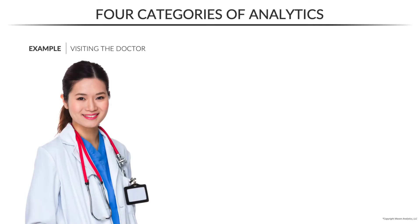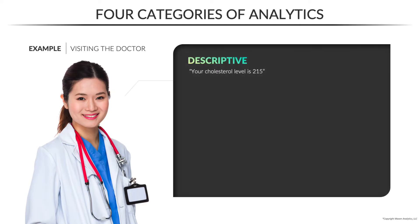Here's an example to make this a bit more tangible. Imagine that you're visiting the doctor for an annual health check. In a purely descriptive world, the doctor might say something like, your cholesterol level is 2.15, and then walk out of the room. And that would be pretty strange and unsettling, right? Because that number is pretty much meaningless without additional context. Are you supposed to be happy or concerned? Has it gotten better or worse? Is there something you should do as a result of this news? Clearly, you're left with more questions than answers.